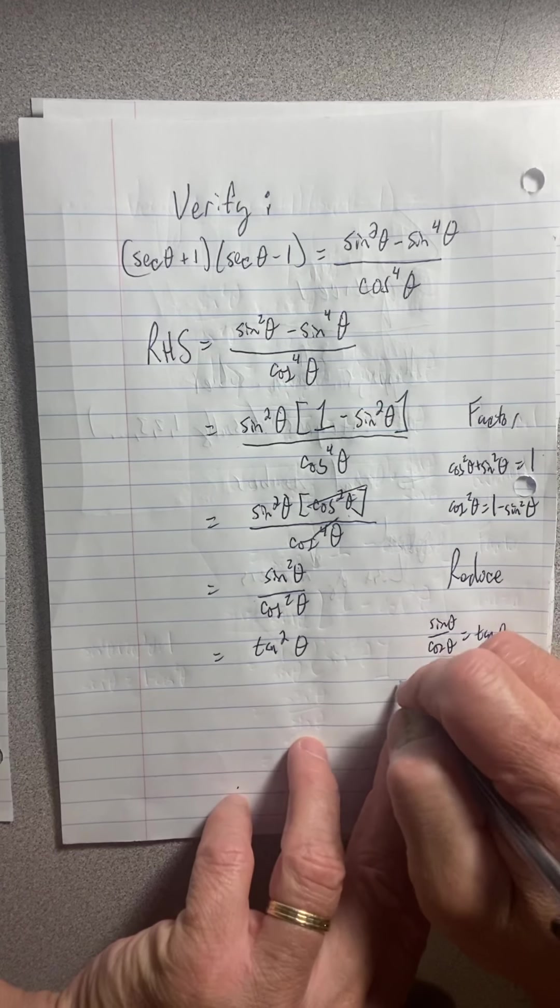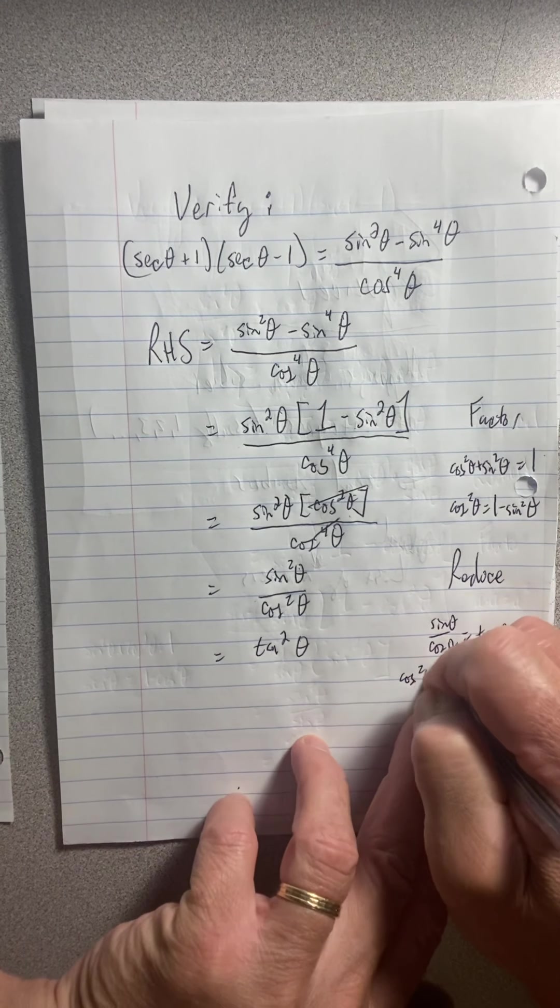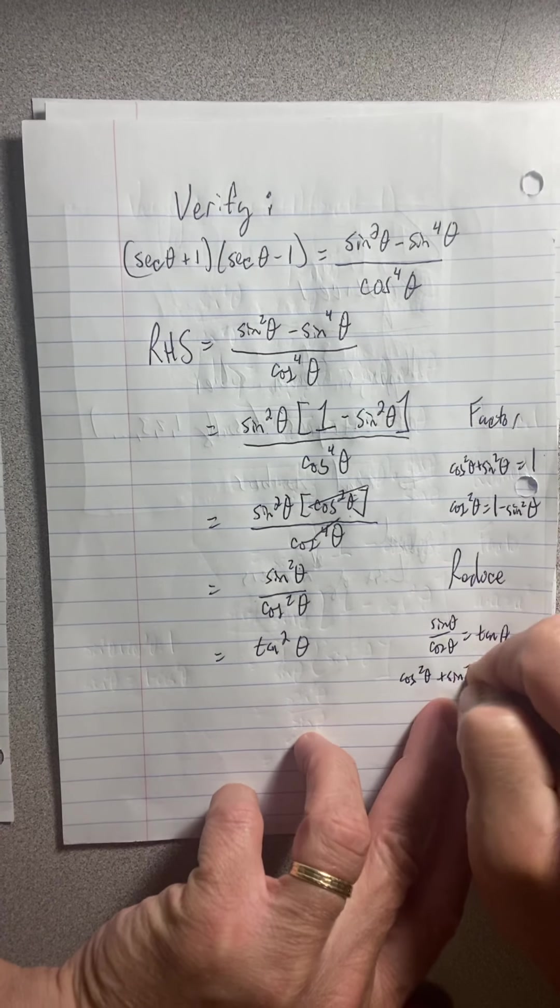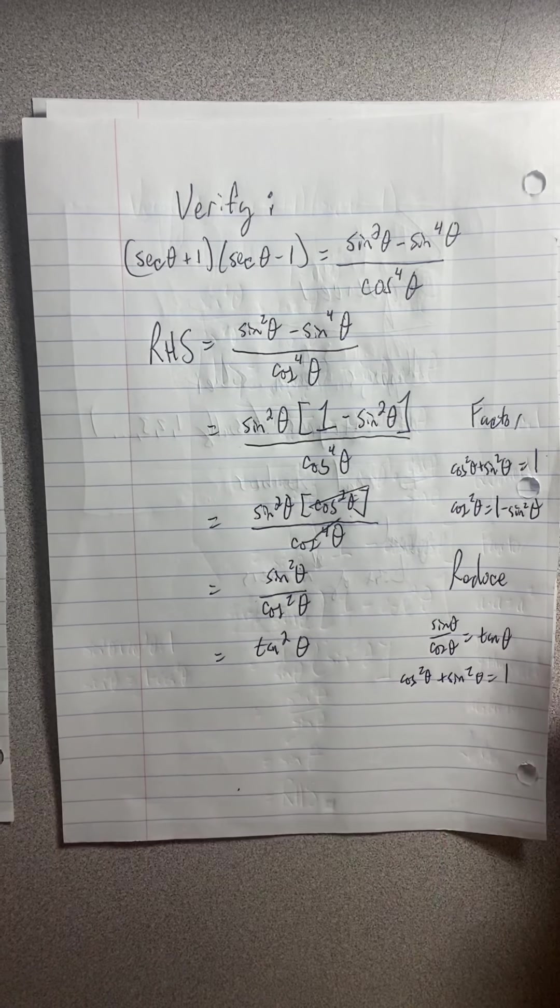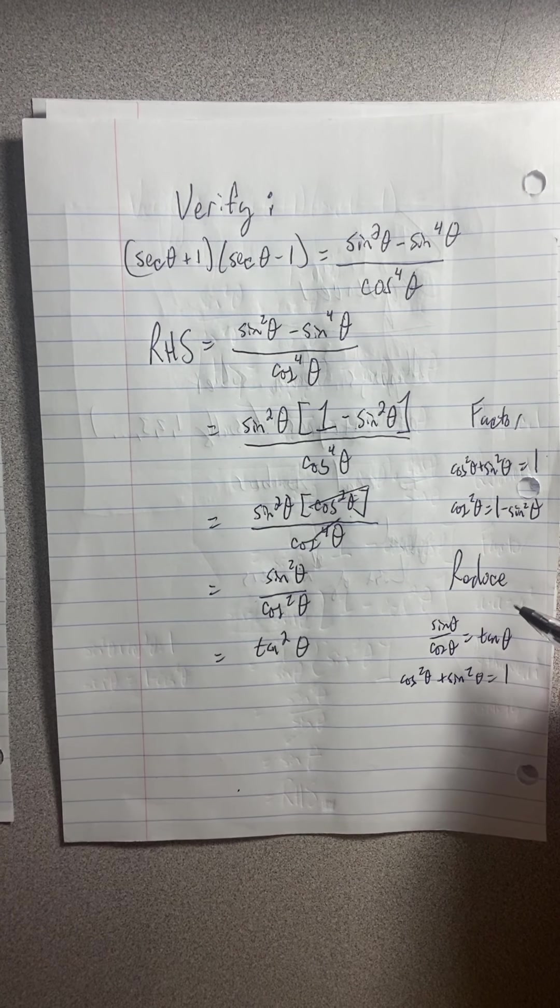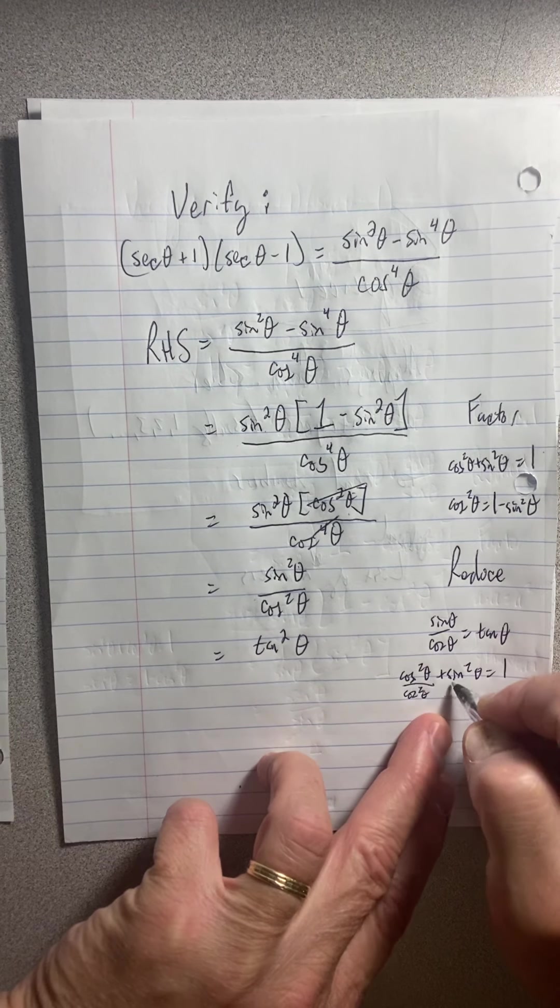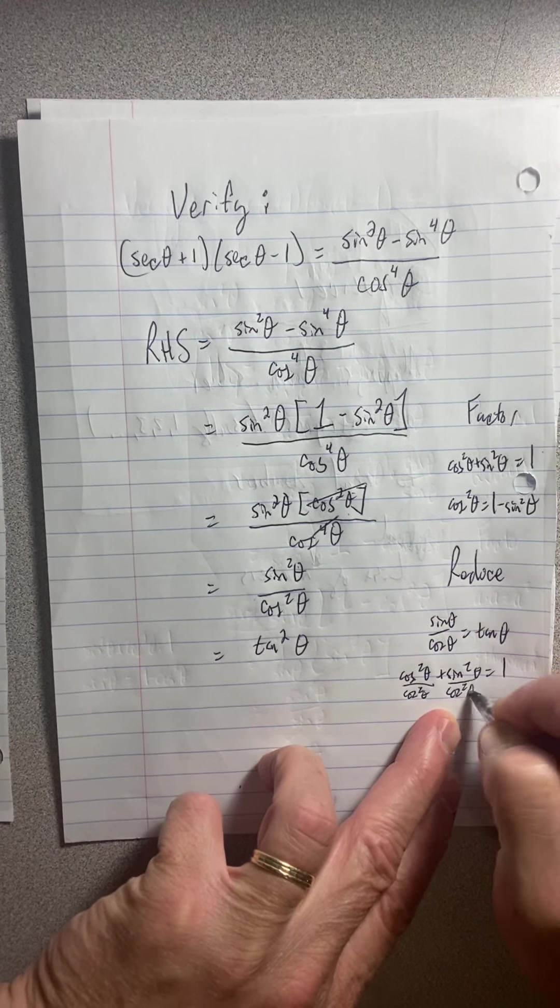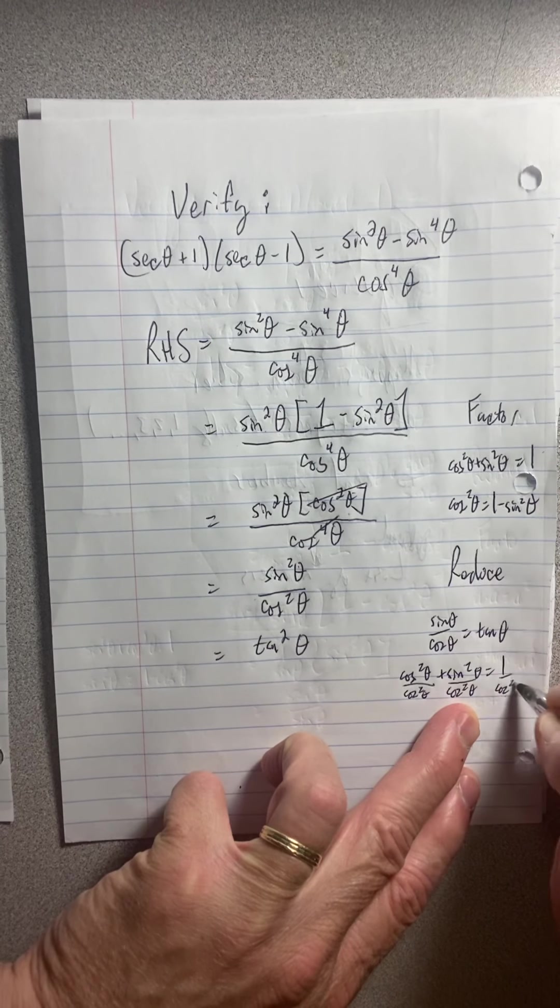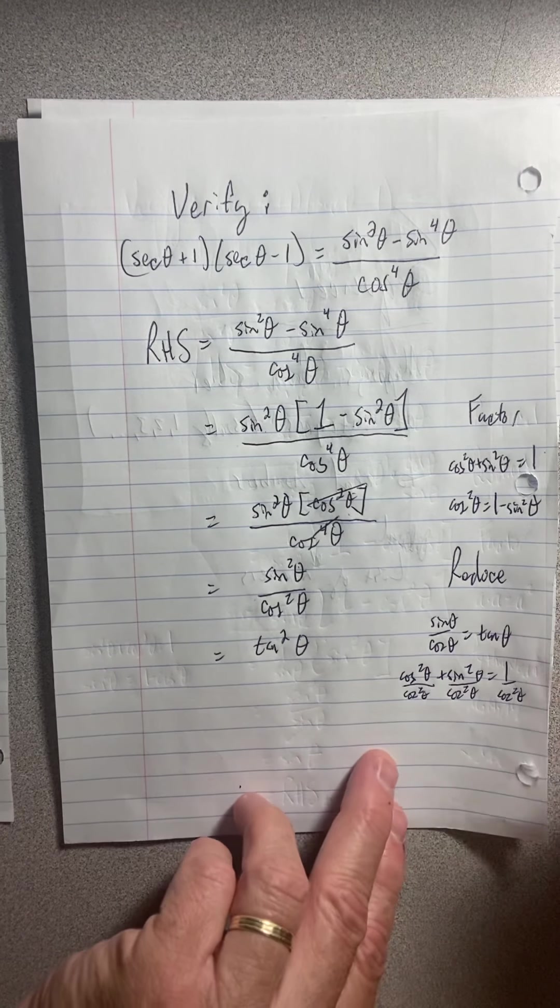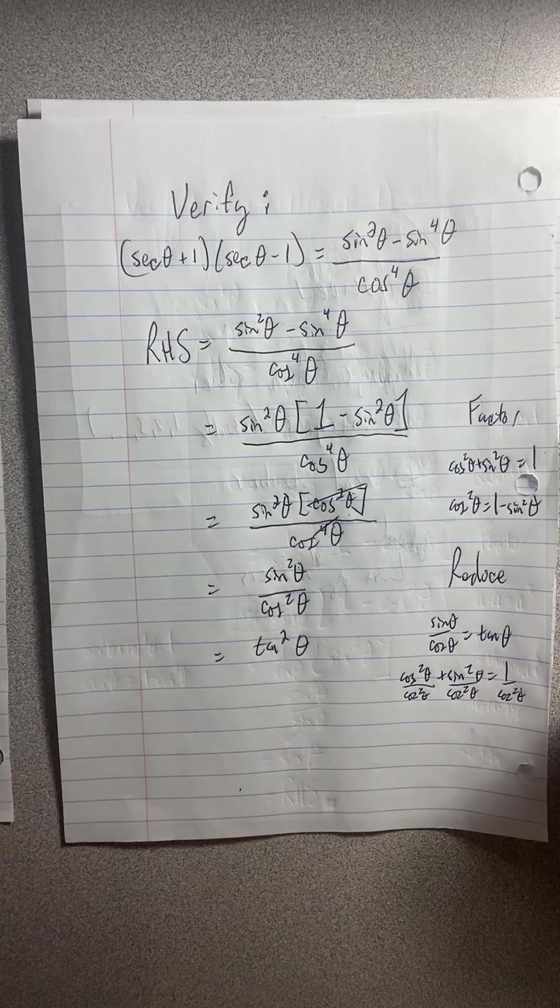Oh one of the Pythagoreans. Remember the Pythagorean: cosine squared theta plus sine squared theta equals one. If I divide through by cosine squared, dividing each term by cos squared theta, I get another identity also called the Pythagorean identity.